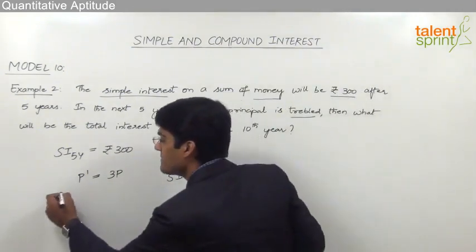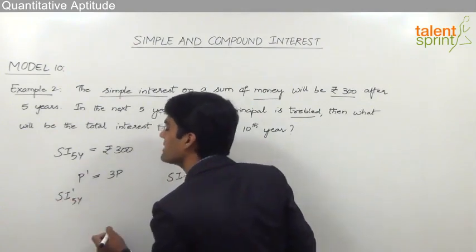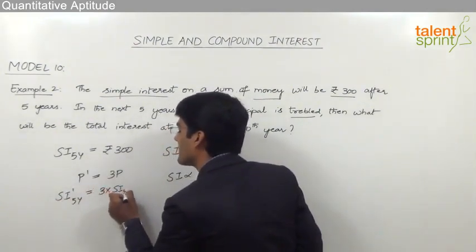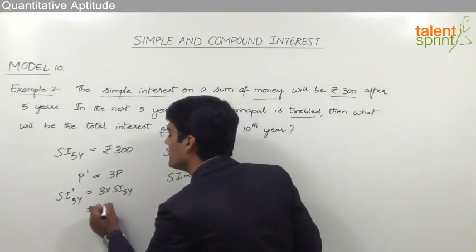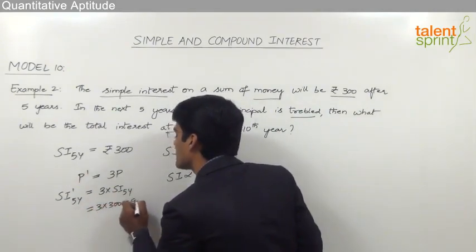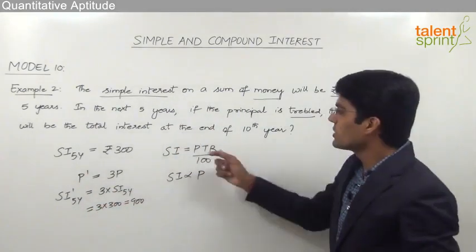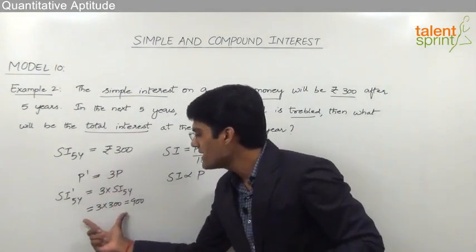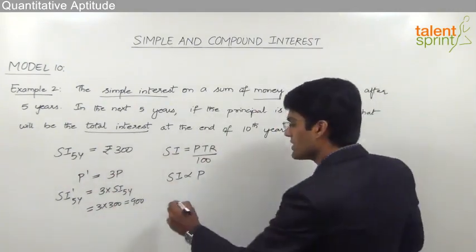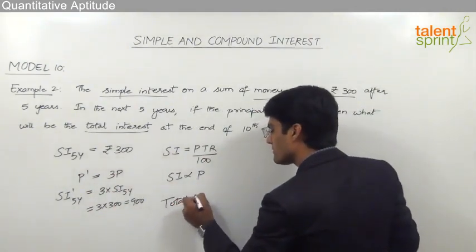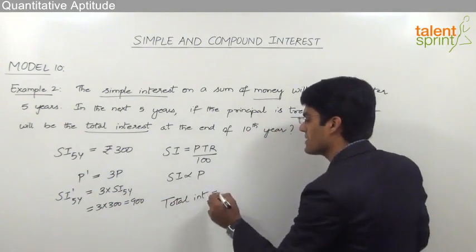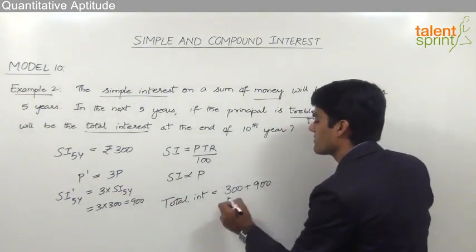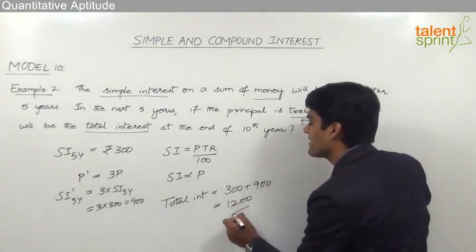Since the principal becomes 3 times, the simple interest SI' for the next 5 years will also become 3 times the simple interest for the first 5 years. So SI' = 3 × 300 = Rs 900. The total interest at the end of the 10th year is the interest for the first 5 years plus the interest for the next 5 years: 300 + 900 = Rs 1200.